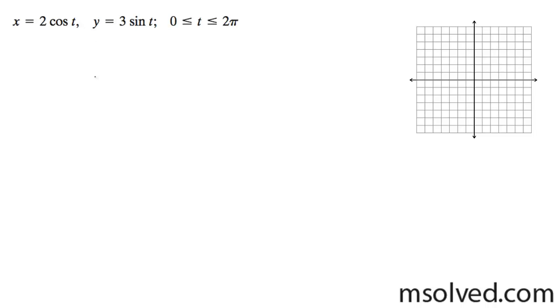We're going to go ahead and find the parametric, or take the parametric equations and find the rectangular equation. Based off the graph, 0 to 2 pi, this is a complete circle, so we can go ahead and graph this.